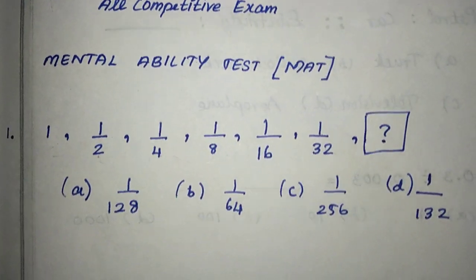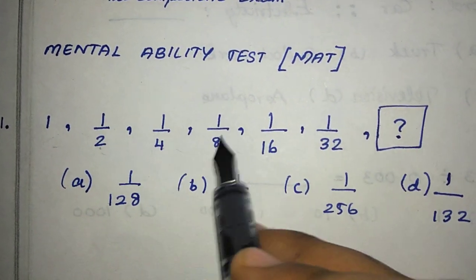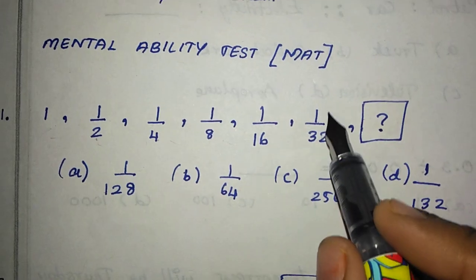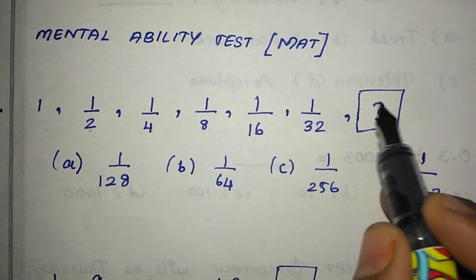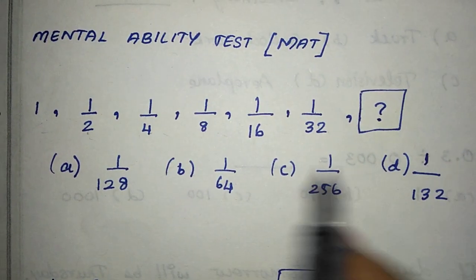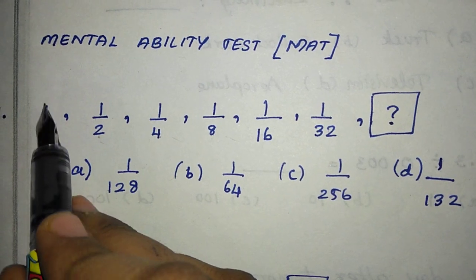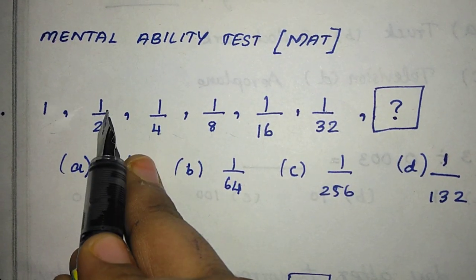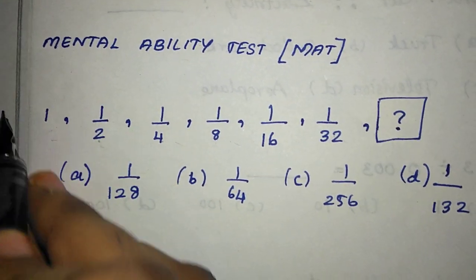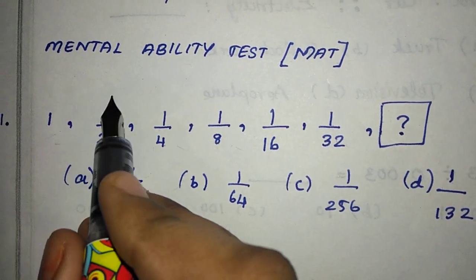And now, first: 1, 1/2, 1/4, 1/8, 1/16, 1/32 — and next, there are 4 options. How can we do this? First, we have 1, then 1/2. We can convert this into 0.5.